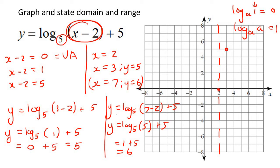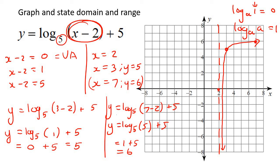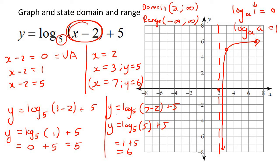Now we can draw the graph. Let's do the domain: the domain will always be from the asymptote, so 2 to infinity. The range will always be negative infinity to positive infinity for a logarithmic graph.